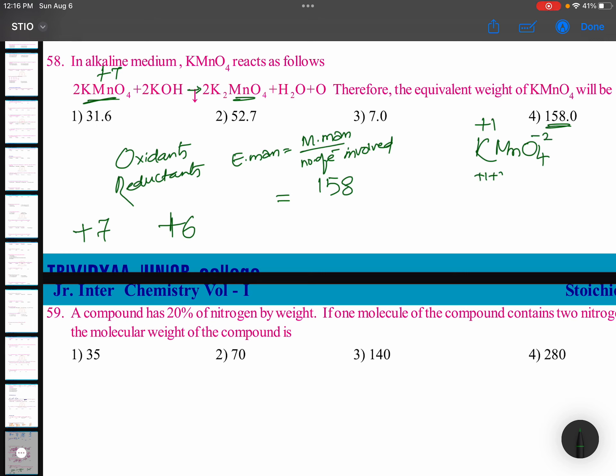If you calculate this: plus 1, plus x minus 8 is equal to 0, x is equal to plus 7. In the same way, K2MnO4, if you find out, the oxidation state of manganese will come plus 6. Plus 7 to plus 6, the change in oxidation state is 1.